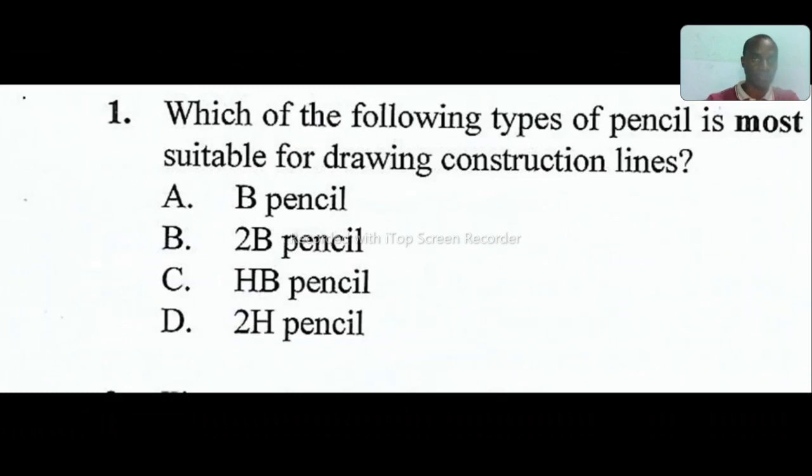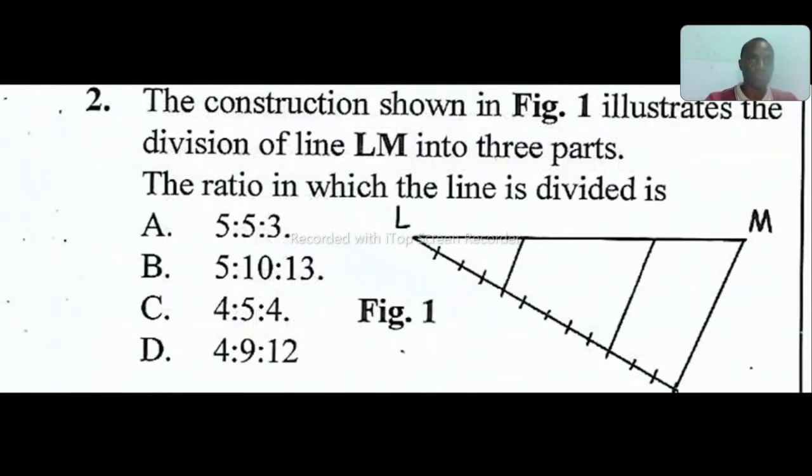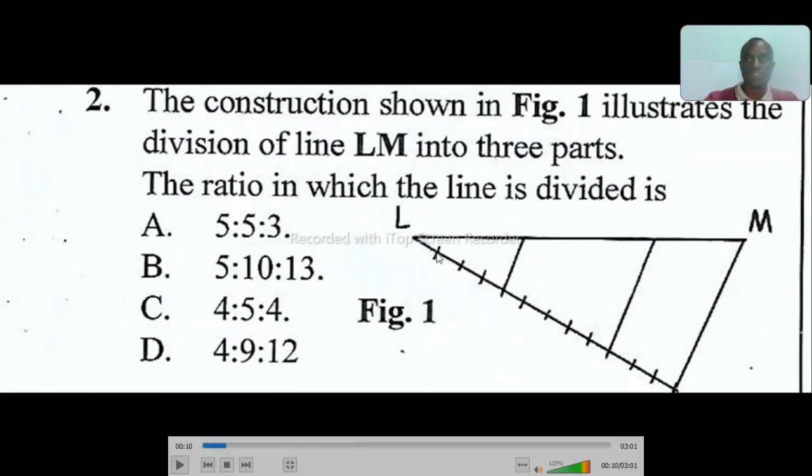Question number one: which of the following type of pencil is most suitable for construction line? The correct answer is H. H pencil, hard pencils, are good for all forms of construction. B pencils are normally for drawing black lines. HB stands for intermediate between B pencils and hard pencils. So the correct answer is D for this particular option.